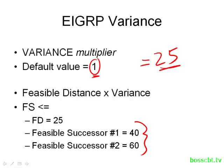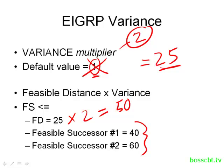Let's make a change and not use the default value. Instead, let's set the multiplier to a value of 2. Now when we multiply 25 times 2, we get 50. This is the new value, and we compare each feasible successor to it. The first route, which has a value of 40, is now less than 50, so EIGRP would go ahead and load balance between its best route and that feasible successor. The second feasible successor still has a value higher than 50, so that route would not be included in the load balancing.